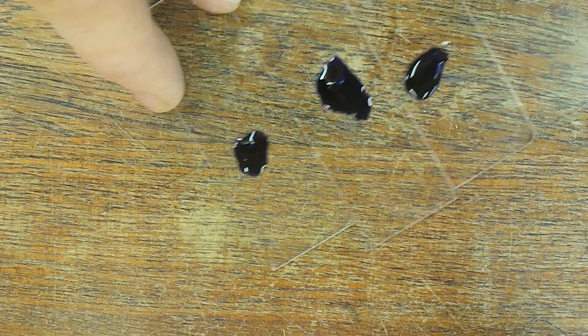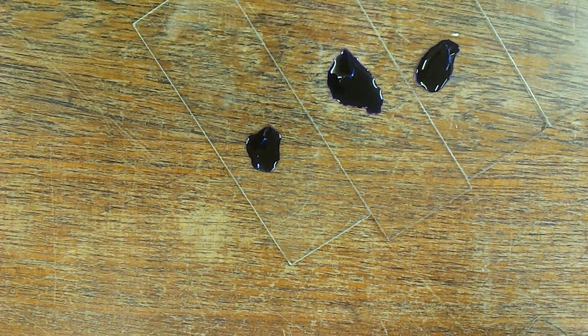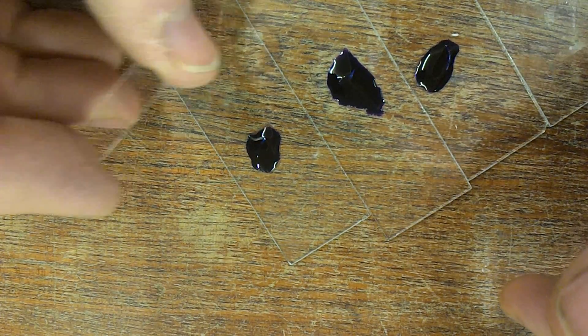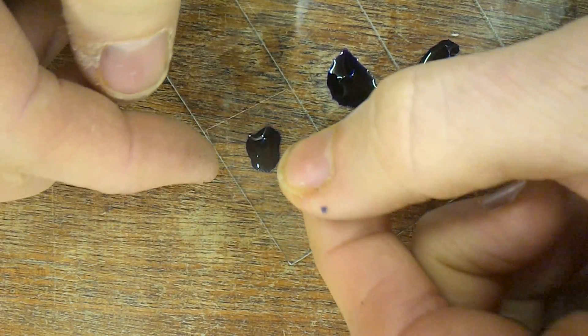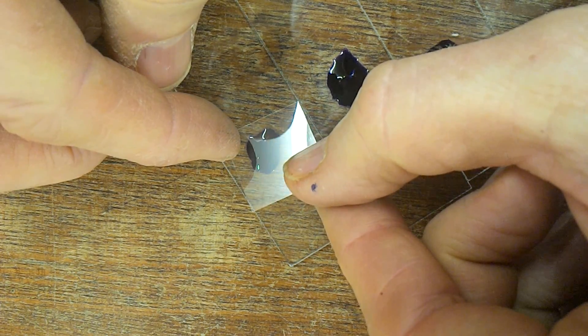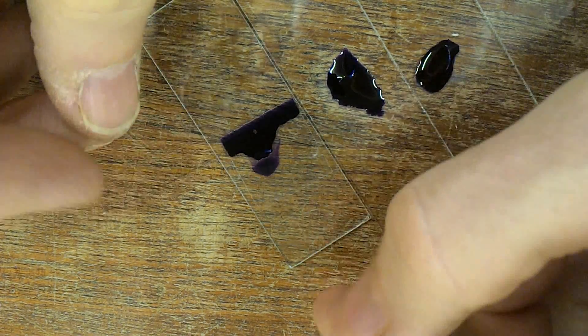To cover slip, bring your cover slip in at an angle at 45 degrees and lower it gently onto the stain. Then we're going to compress this to spread the cells.